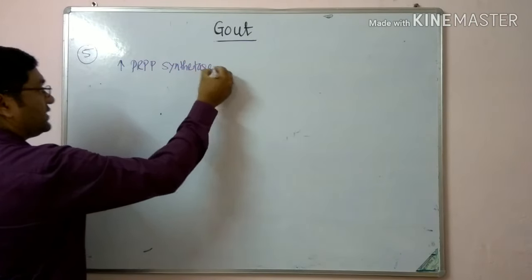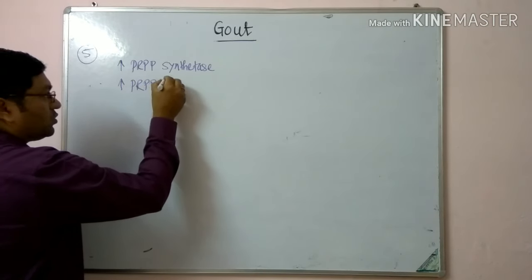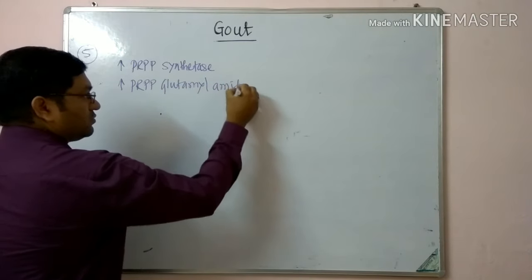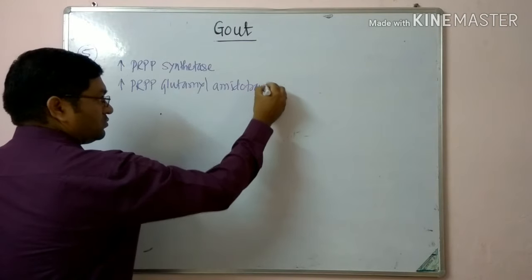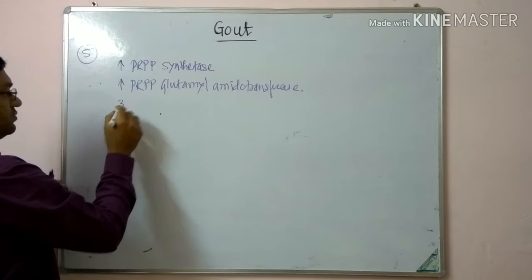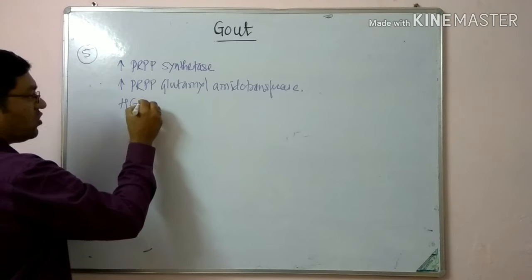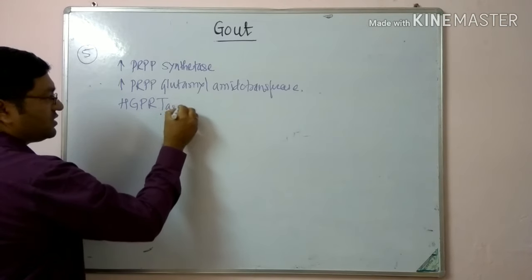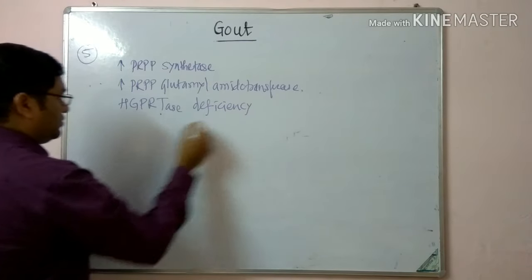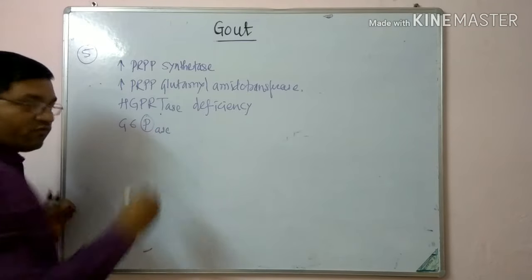Coming to the primary causes of gout — when the metabolism of purines is involved, it is known as primary gout. There are five important causes. The first is increased activity of PRPP synthetase. The second is increased activity of PRPP glutamine amidotransferase.